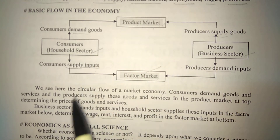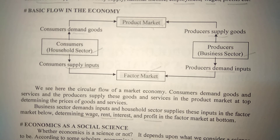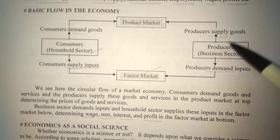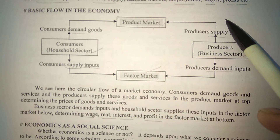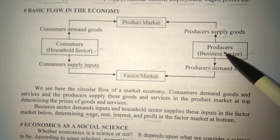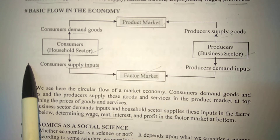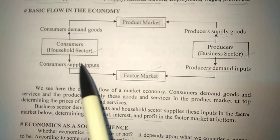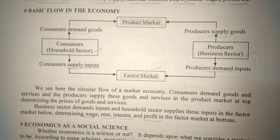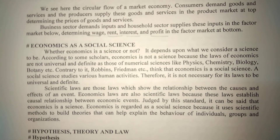This is the basic flow in the economy in the two-sector model. We can extend this flow for the third sector — the government — and also for the fourth sector, which is the foreign sector. When the government is added, households and firms pay taxes and receive subsidies. Adding the foreign sector allows for exports and imports, expanding the model to three or four sectors.